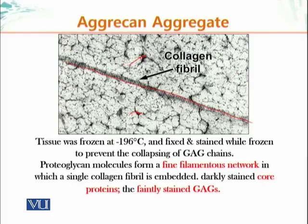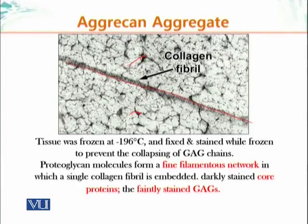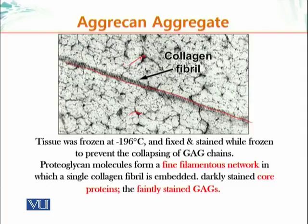The way GAGs are photographed is that tissue is frozen at minus 196 degrees Celsius, and then it is fixed and stained in a frozen state to prevent the collapsing of GAG chains. These are hydrophilic molecules that are associated with water. In normal EM preparation, water is removed through organic solvents, which would cause these molecules to collapse. So the procedure must be done on a frozen sample in order to obtain the desired photograph of these carbohydrate molecules.